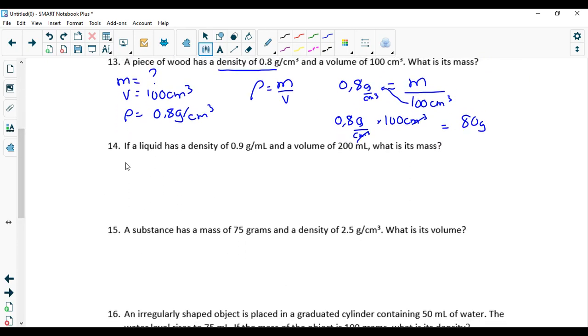All right, back to 14. If a liquid has a density, so again m equals, v equals. Density of 0.9, and a volume of 200 mL. And the units are correct, mL and grams, we're good. What is the mass?